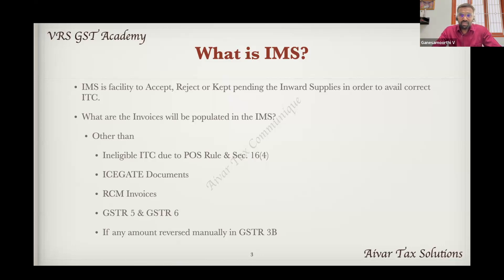From January, we can decide the IMS facility. From January, we can decide the ITC. So that is why we can get an option — we can get an option for six months.